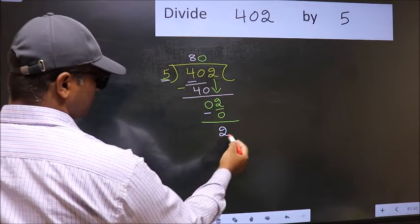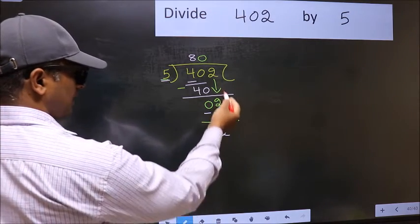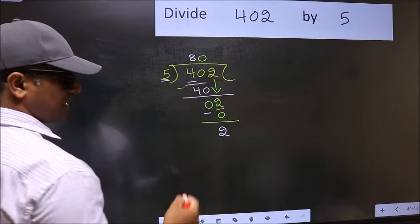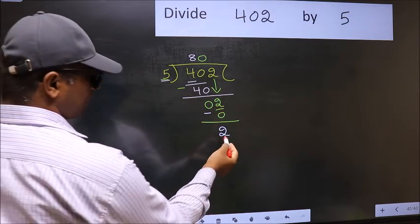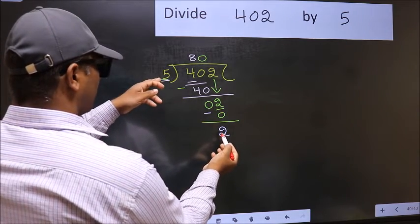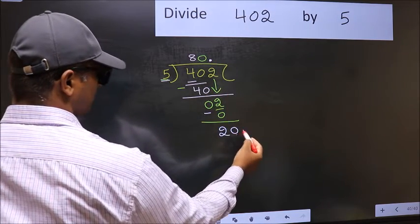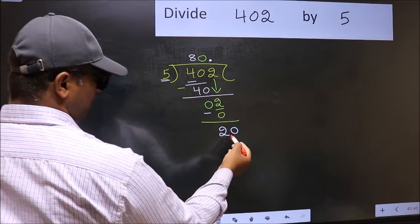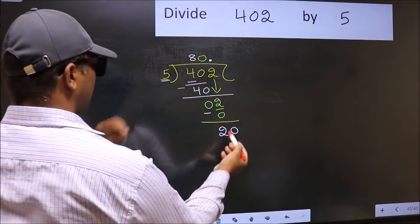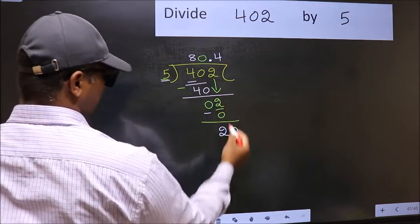Over here we did not bring any number down, and 2 is smaller than 5, so now you can put dot and take 0. So 20. When do we get 20 in 5 table? 5 fours 20.